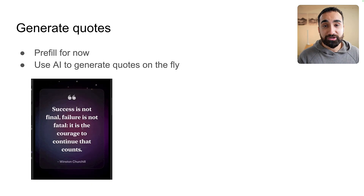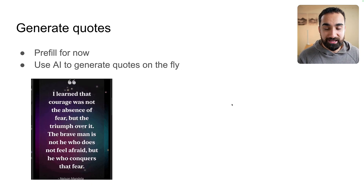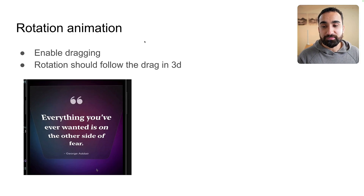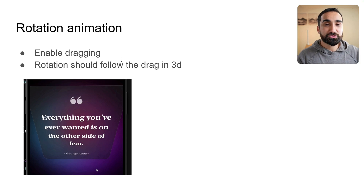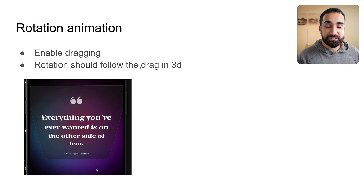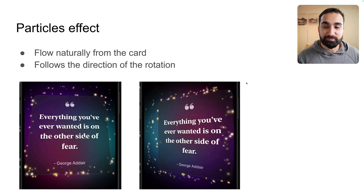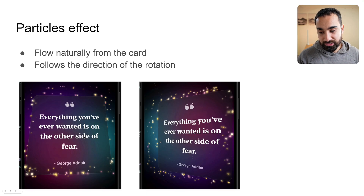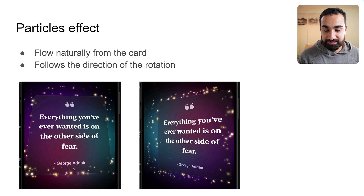All these quotes could be totally custom and relevant to the user. The next core feature is the rotation animation. We need to enable dragging inside the application, and when the user is dragging, the card should rotate as they drag on screen. If the user is dragging down, the rotation of the card should go down — everything should be in 3D space and following everything naturally. All the particles should come out from the edge of the card, which makes the particle effect look perfect and natural.